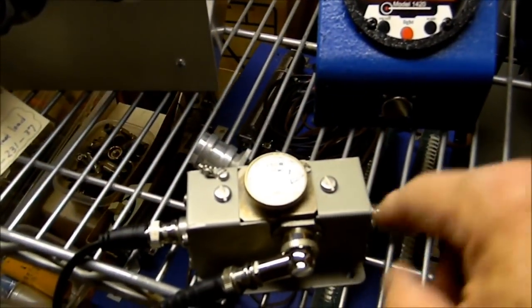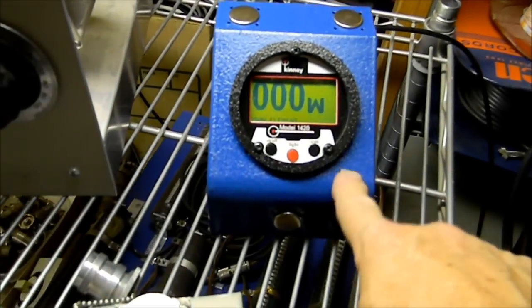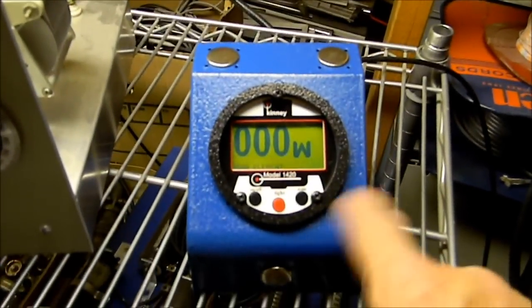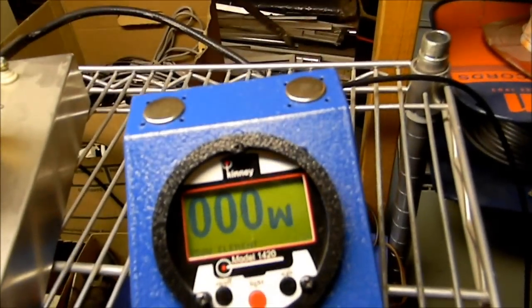But I want to show you something. What I'm using here is a Bird watt meter. This is the Bird line section with a 250-watt element. This is a digital readout that I've had for some time. I really like it. You don't have to have parallax or strain looking at a meter, but anyway, watch this.